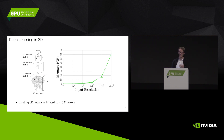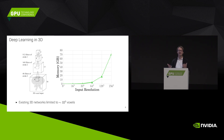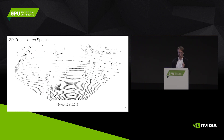Maybe you got lucky and Jensen got you a DGX1, but this is still not scalable. So we want to have something that's more scalable.